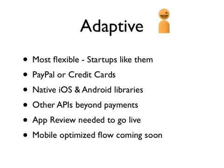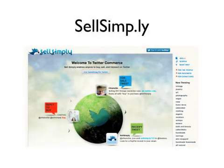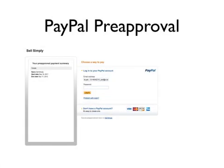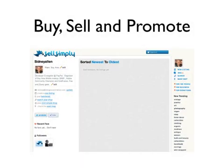I want to talk about one company using our APIs because it illustrates what you can do when you're creative with your business model. Sell Simply is a marketplace for selling on Twitter. You use your Twitter account to log in via OAuth, and then they ask you to set up a pre-approval with PayPal where you authorize Sell Simply to do transactions against your PayPal account up to a certain dollar amount.